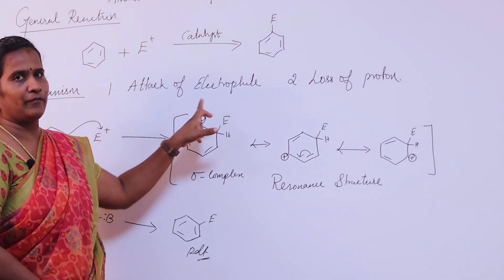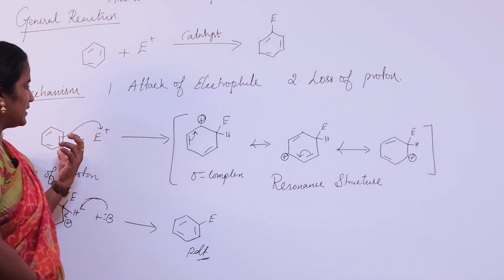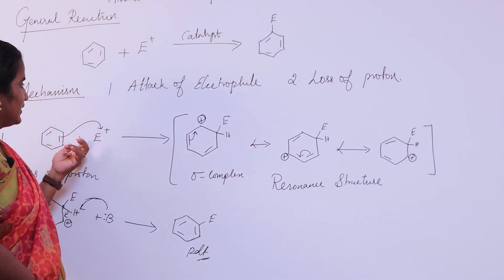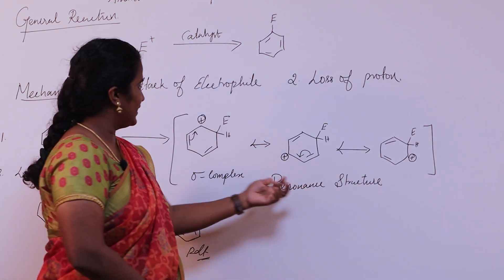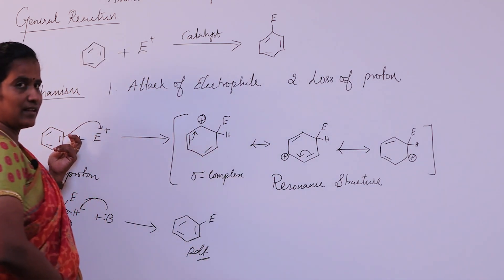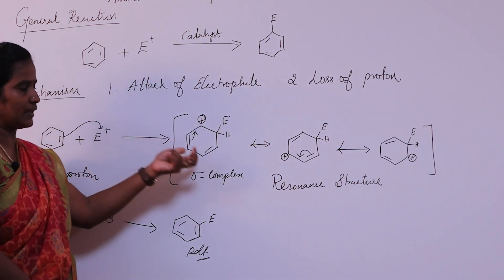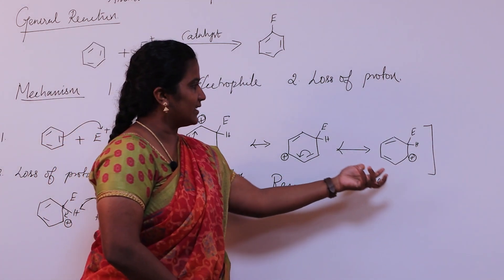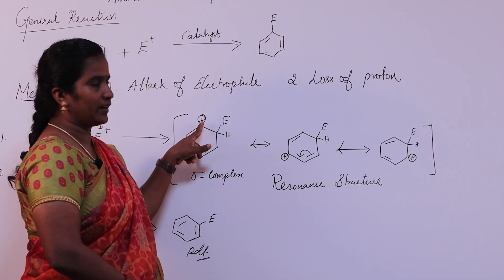The mechanism follows two steps. The first step is attack of the electrophile, and the second is loss of a proton. In the first step, the electrophile attacks the benzene ring. The pi electrons conjugate with the electrophile to form a sigma bond complex, which is a resonance structure. This forms a carbocation.